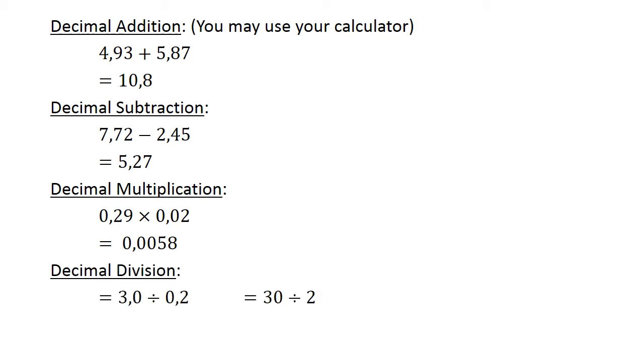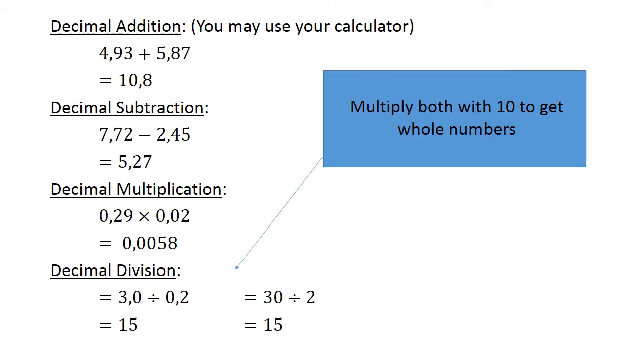Decimal division. 3.0 divided by 0.2. Multiply both with 10 to get whole numbers. 30 divided by 2 equals 15.